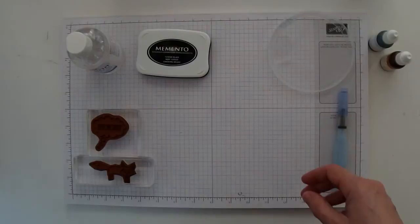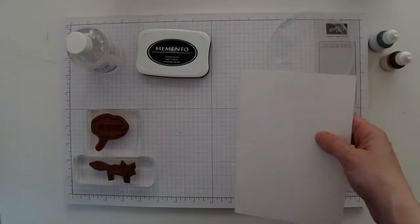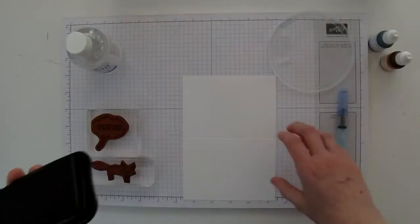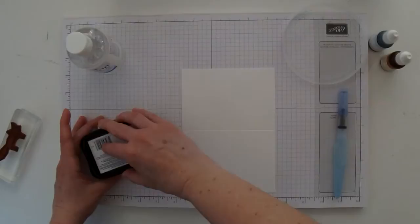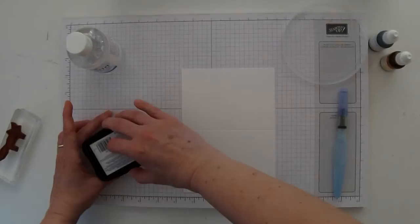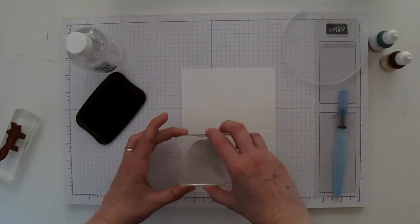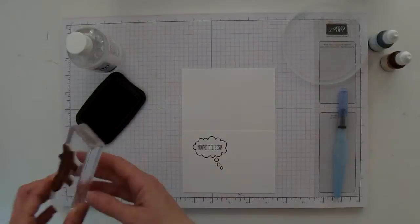We'll need some Whisper White note cards and envelopes. I'm going to keep this card unfolded right now because it's easier for me to work when it's completely flat. I'm going to ink up You're the Best from the Just Saying stamp set. I like to do this when the stamp is face up. I'm just going to stamp that kind of close to the top and the left side there, and then I'm going to get my little fox and ink him up. He's going to go down here in the bottom right hand corner.